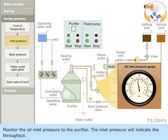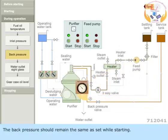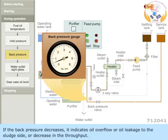Monitor the oil inlet pressure to the purifier. The inlet pressure will indicate the throughput. Decrease in the set inlet pressure indicates that the feed pump filters are dirty. The back pressure should remain the same as set while starting. If the back pressure decreases, it indicates oil overflow or oil leakage to the sludge side or decrease in the throughput.